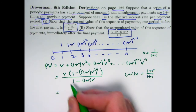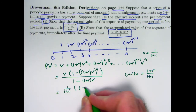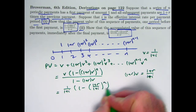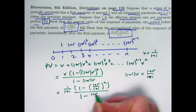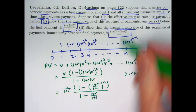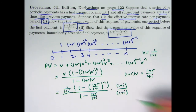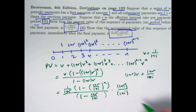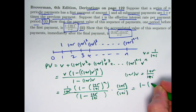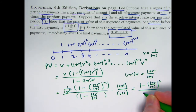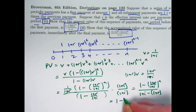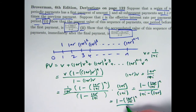Let's make that substitution, replacing v by 1 over (1 plus i). To simplify, multiply the top and bottom by (1 plus i) — this doesn't change the expression. The (1 plus i) cancels with the first term and distributes through the bottom, giving cancellation with the second term. This simplifies to 1 minus [(1 plus r) over (1 plus i)] to the n, all over (1 plus i) minus (1 plus r). The ones cancel, leaving i minus r on the bottom. That's the present value formula — one you could memorize, though it's more useful to memorize the sum of a finite geometric series.